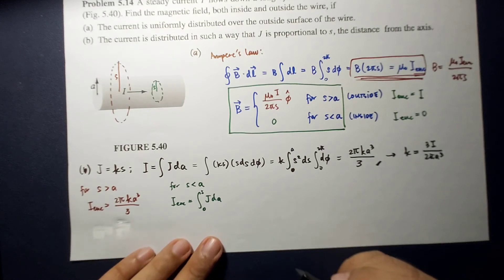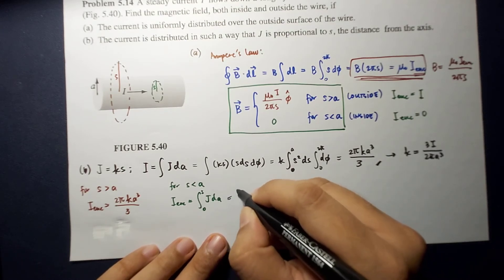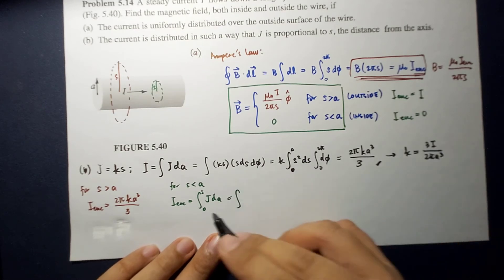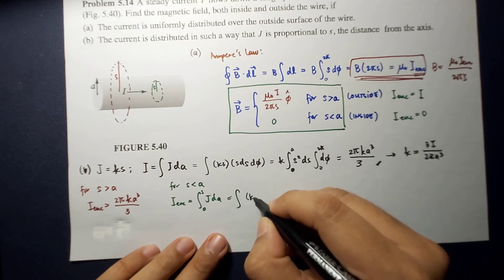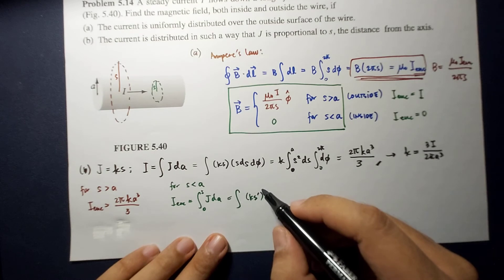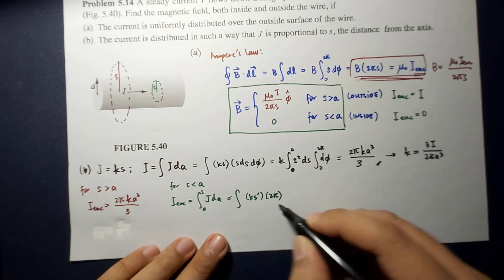I enclosed would be the integral of J dA from 0 to S. As I mentioned earlier, this is equal to integral of, similar to this. So, this is what?